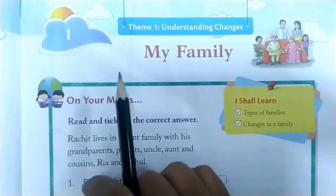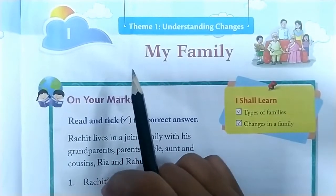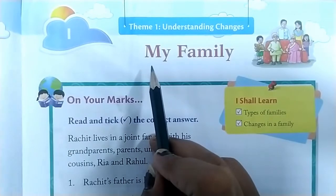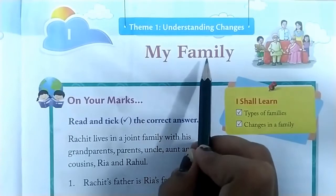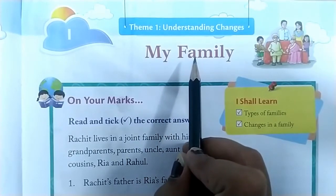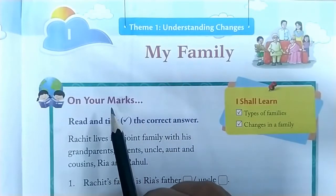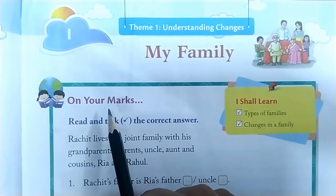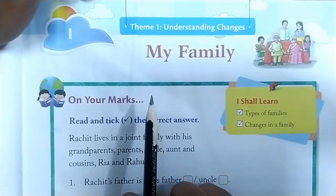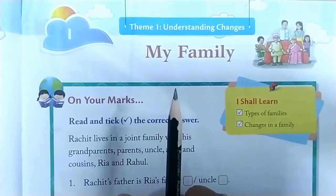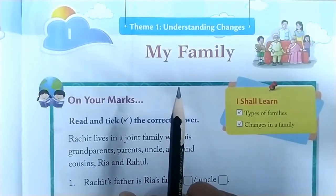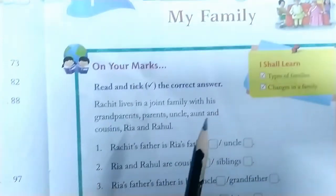Hello dear students, today we are going to start the first lesson of the subject social science and the name of the lesson is 'My Family'. You know what is meant by family — in our family we have family members like our mother, our father, our uncle, auntie, grandparents — it means grandfather and grandmother — and our cousin. All these people make a family.